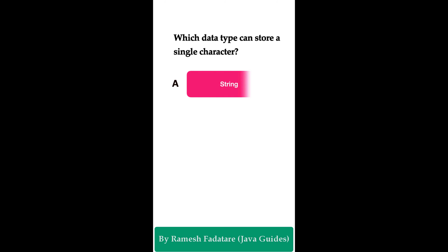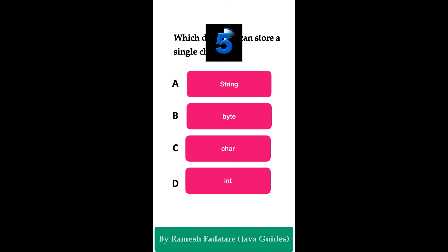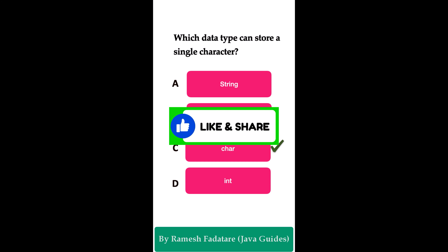What data type can store a single character? Option A: String. Option B: byte. Option C: char. Option D: int. The correct answer is char. In Java, the char data type is used to store a single character. It is a primitive data type representing a single 16-bit Unicode character. The char data type can store any single character such as a letter, digit, punctuation mark, or control character, enclosed in single quotes.